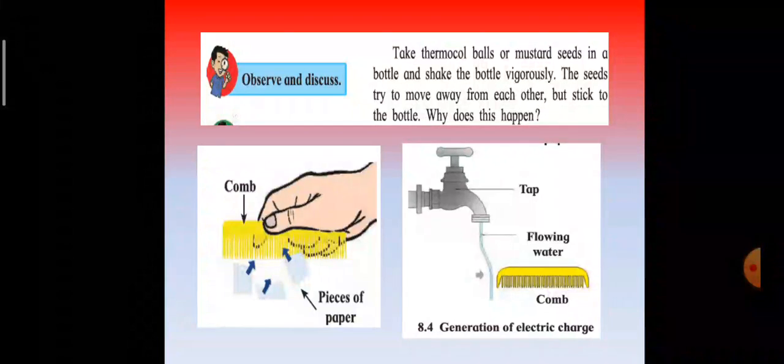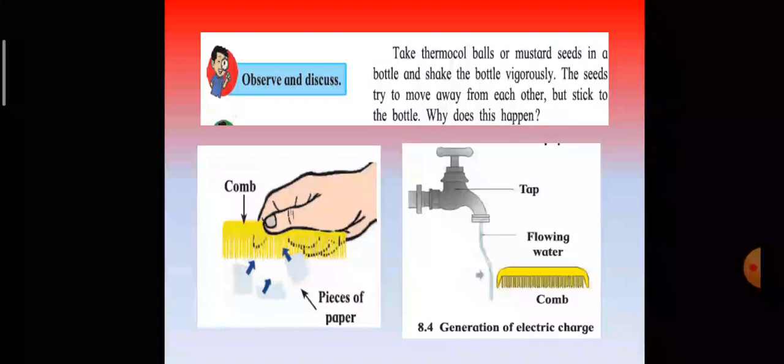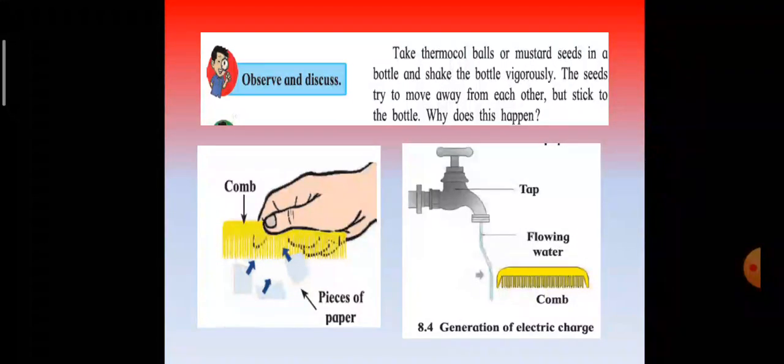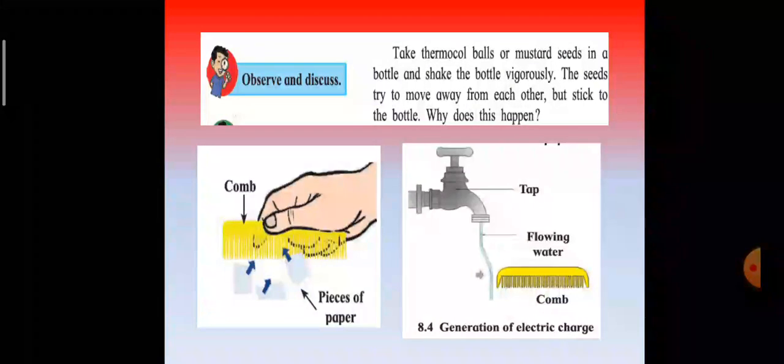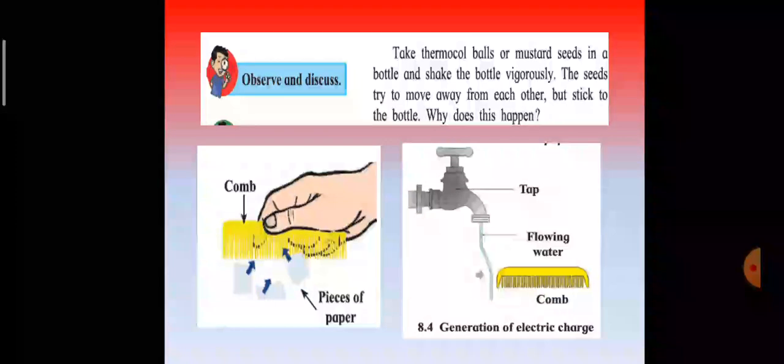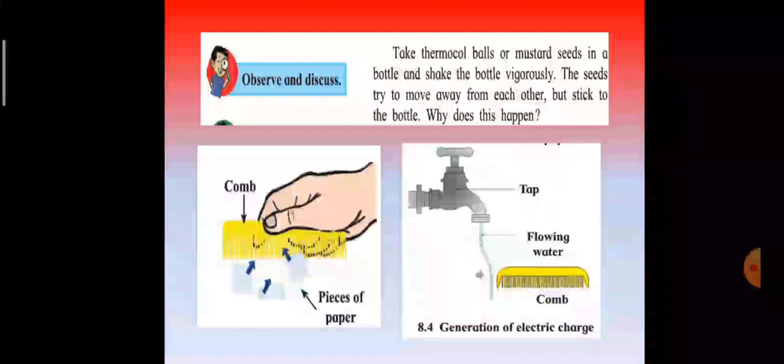As you can see in the picture, what happens is that the flowing water trickle tries to change its flow. It is due to the static electricity. At first, the flow of water is not charged. When a negatively charged comb comes near the flowing water,